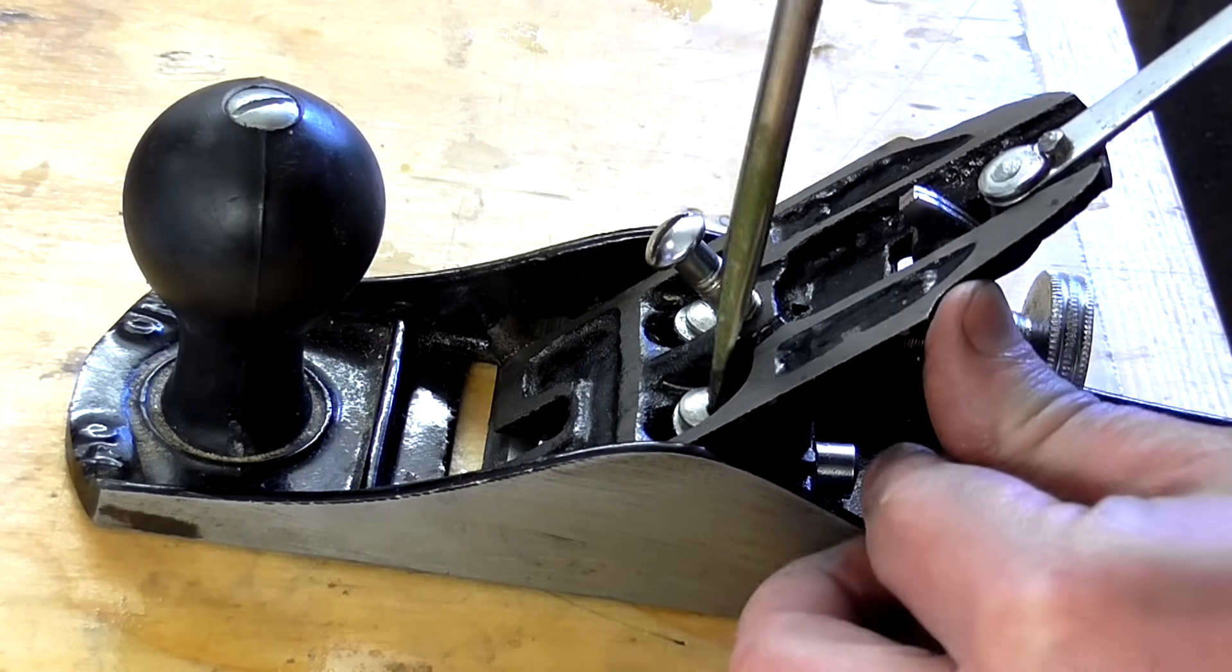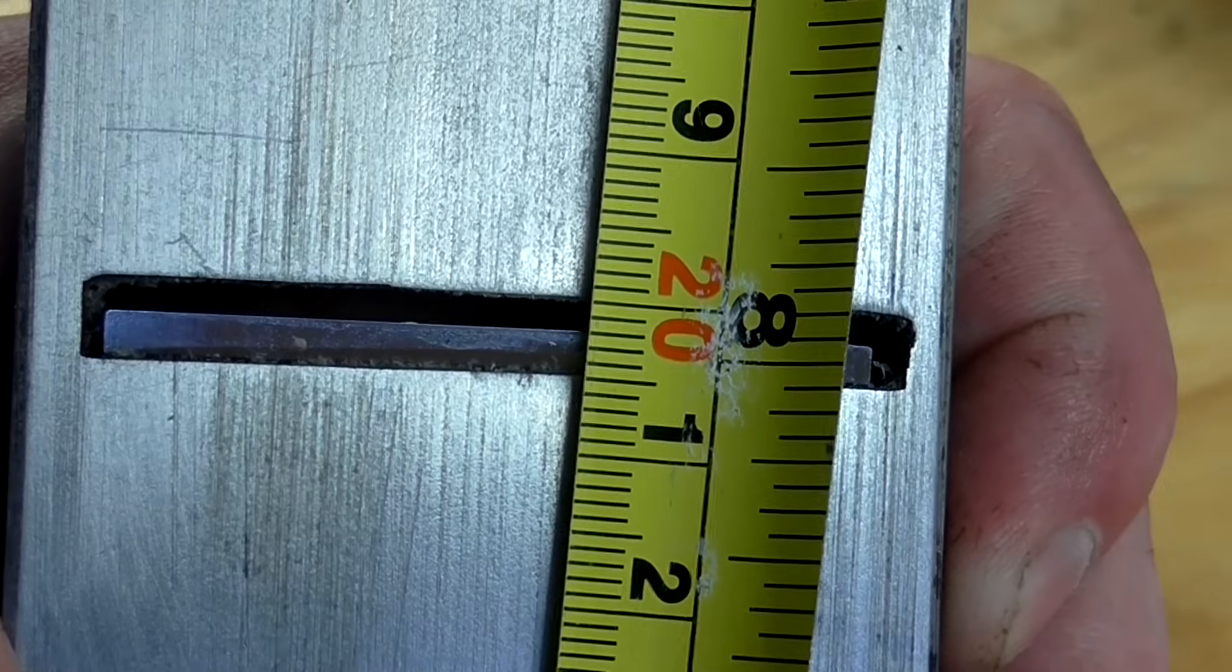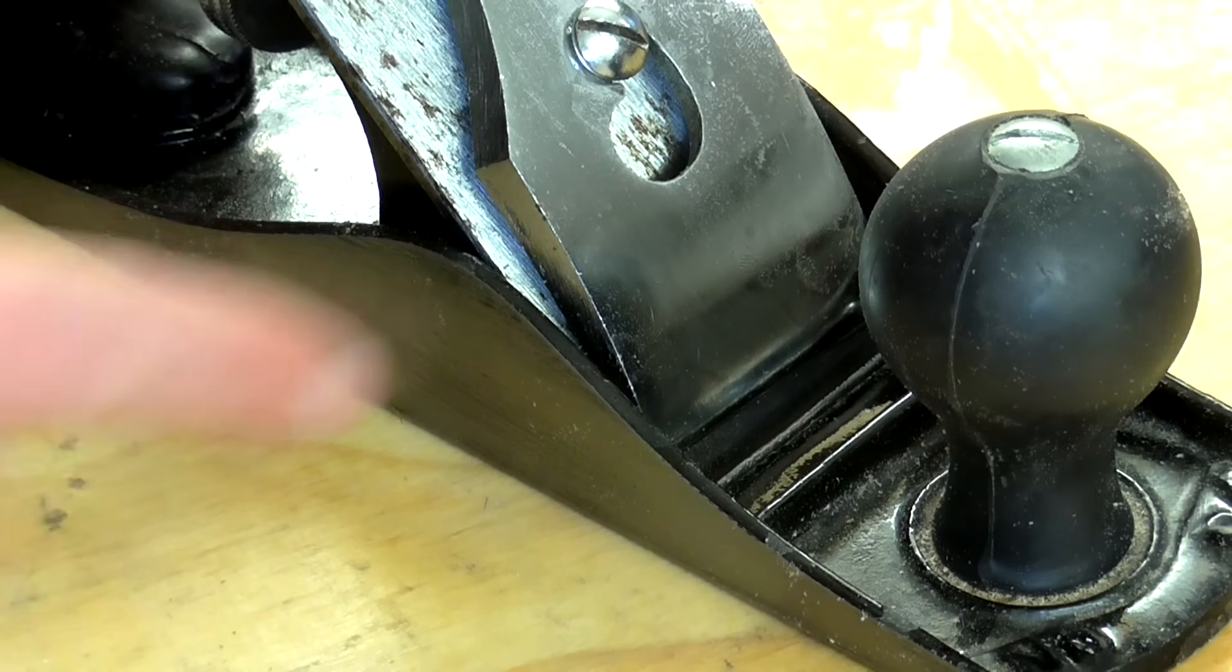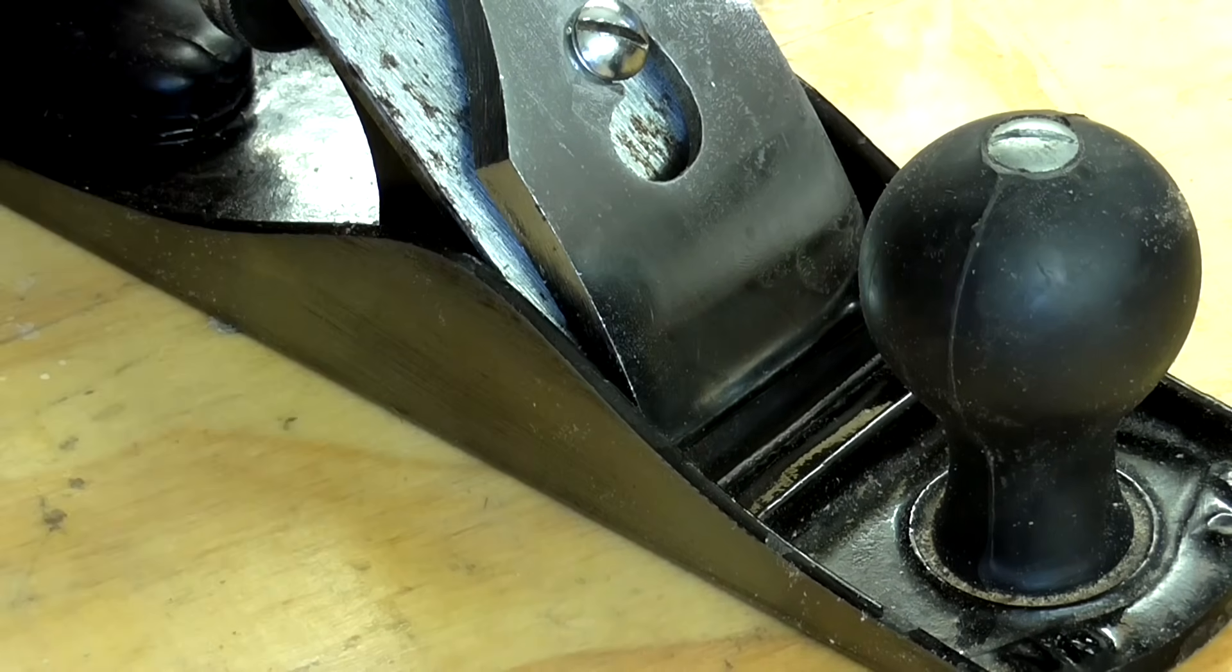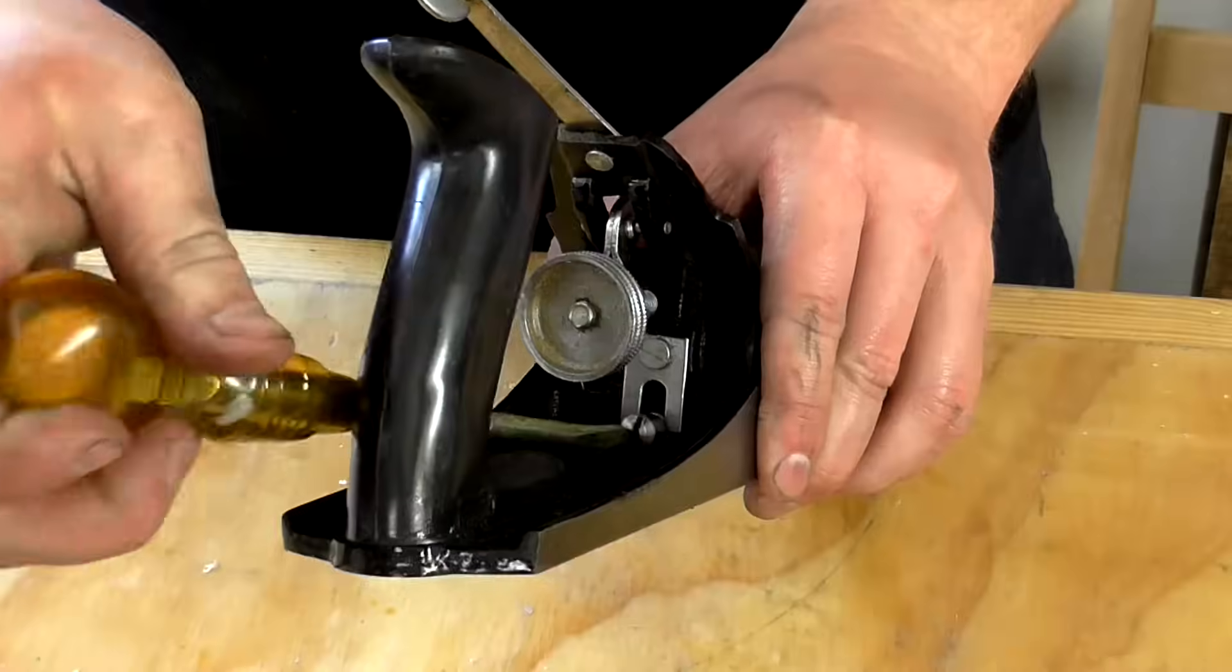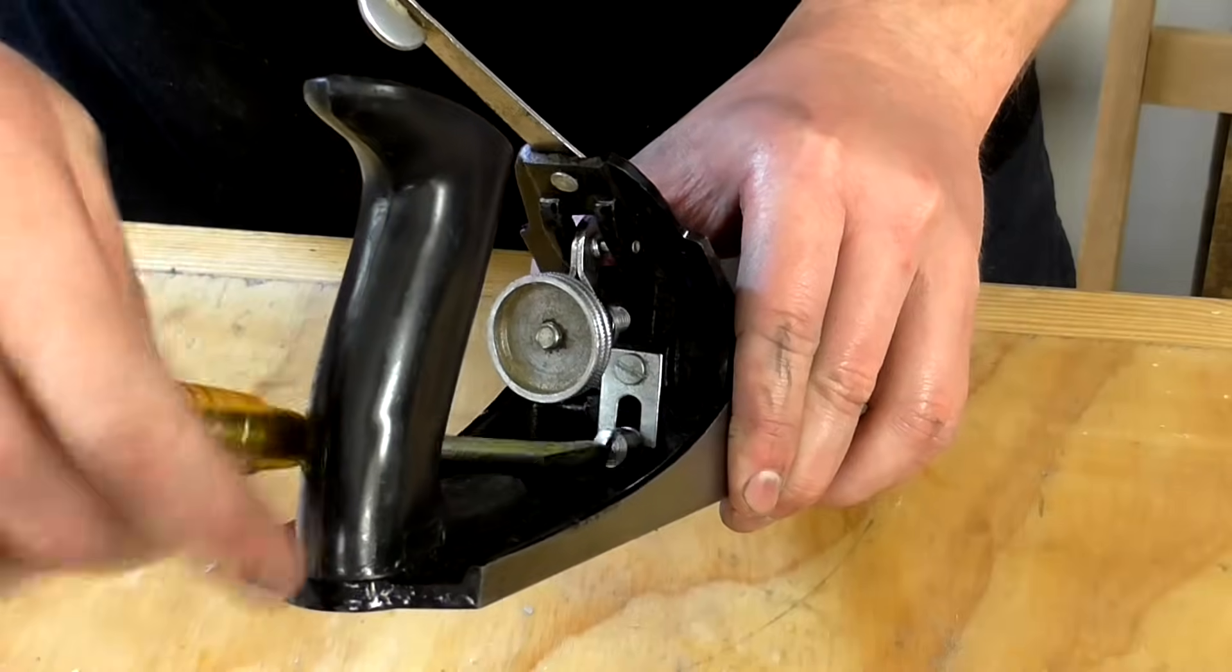Personally, I like to set the distance between the front of the mouth and the cutting iron to 2mm. And that always gives me good results. If you find that shavings get caught in the mouth as you're planing and you're having to remove them by hand, then that's usually a sign that the opening is too narrow, so you'll probably want to open it up a bit.